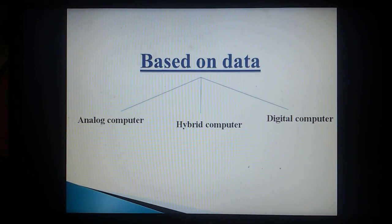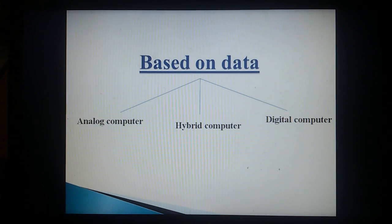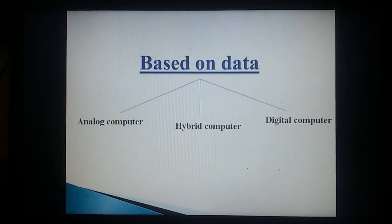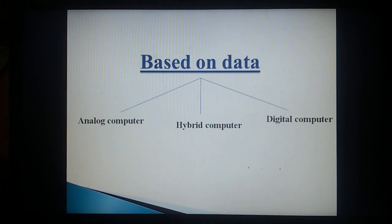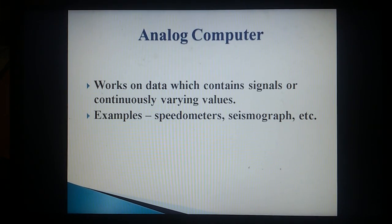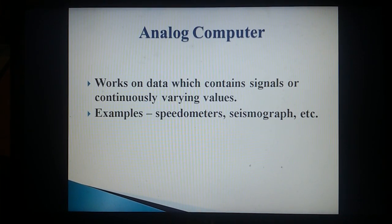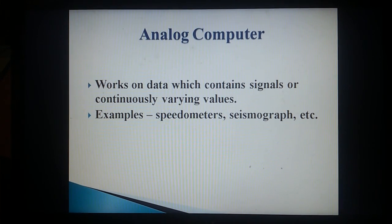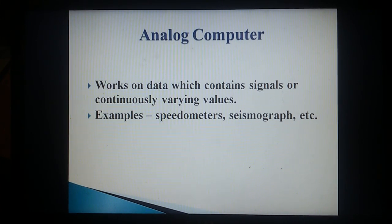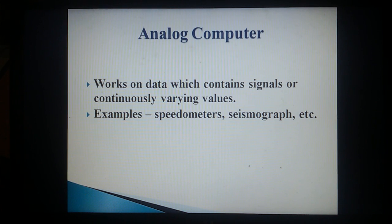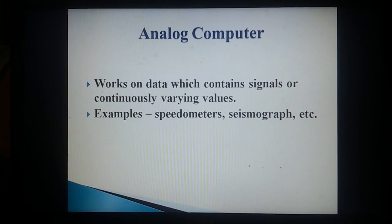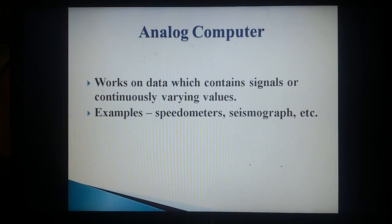Classification based on data is divided into three types: analog computer, hybrid computer, and digital computer. Analog computer works on data which contains signals or continuously varying values. Examples: speedometers, seismograph, etc.